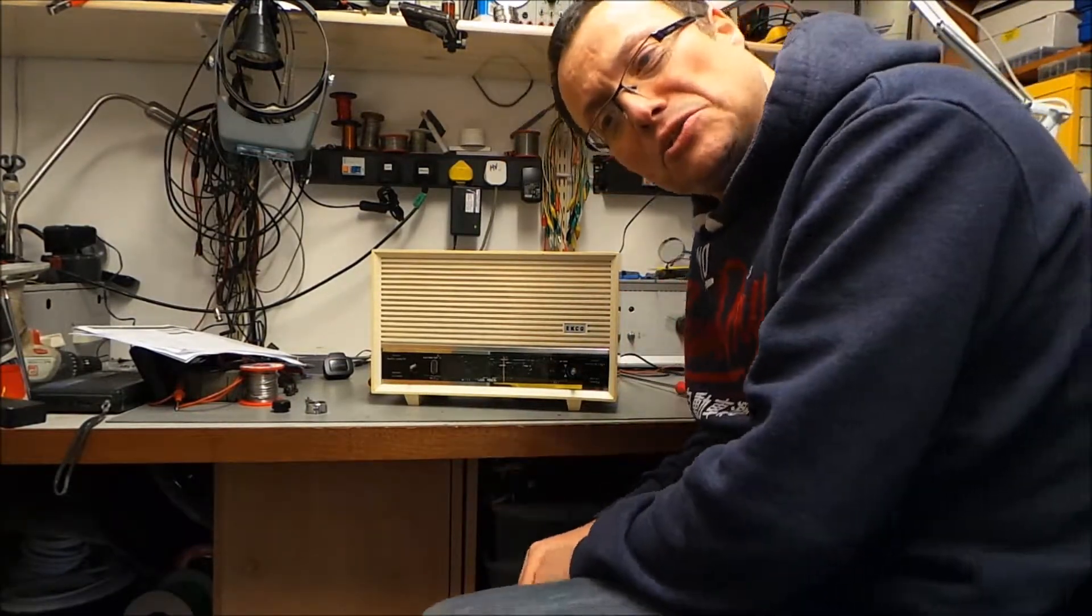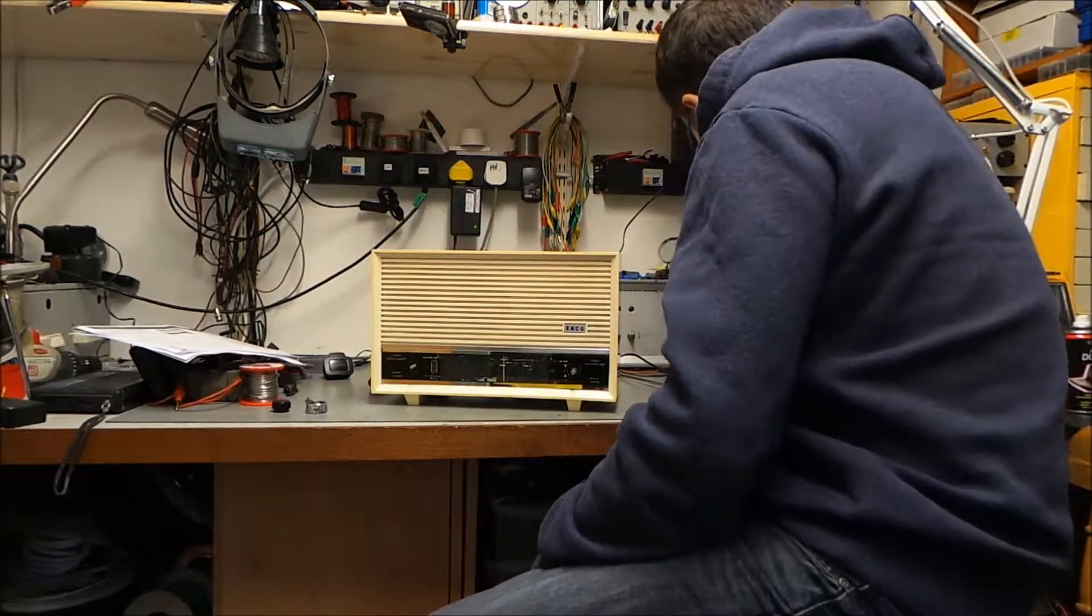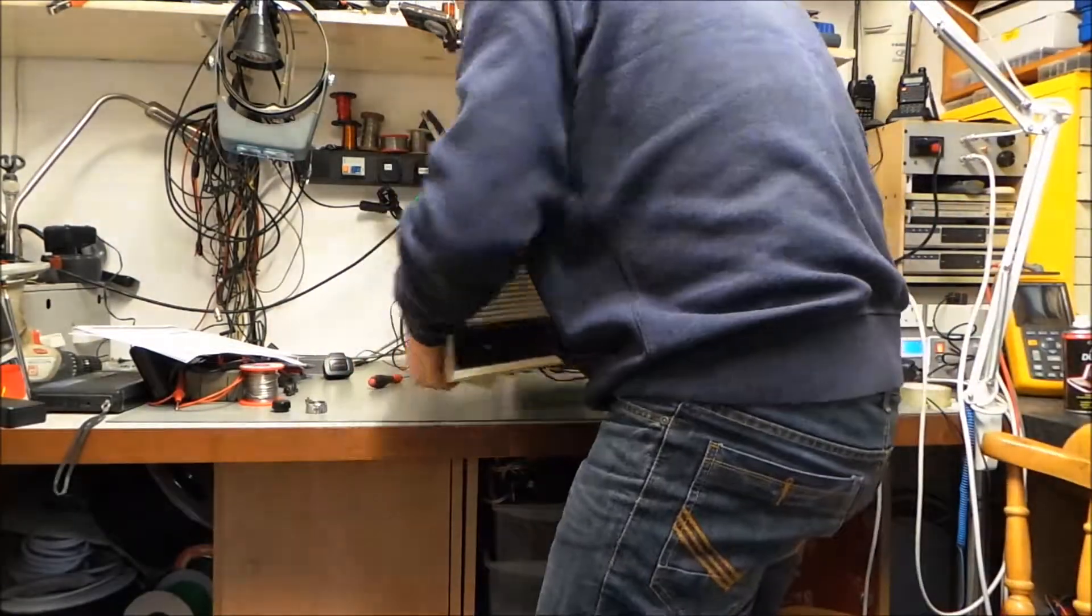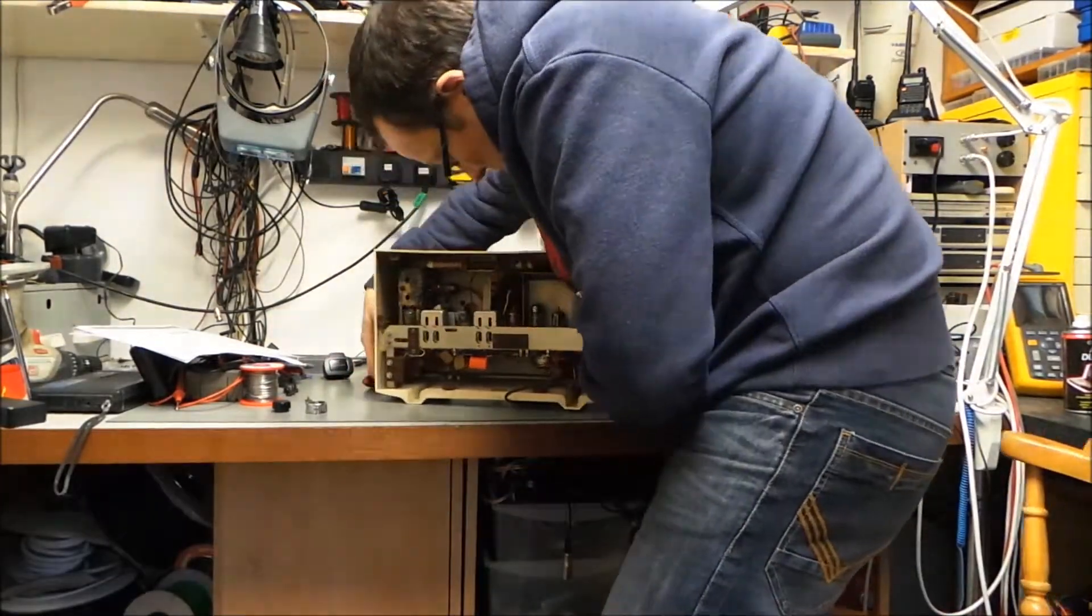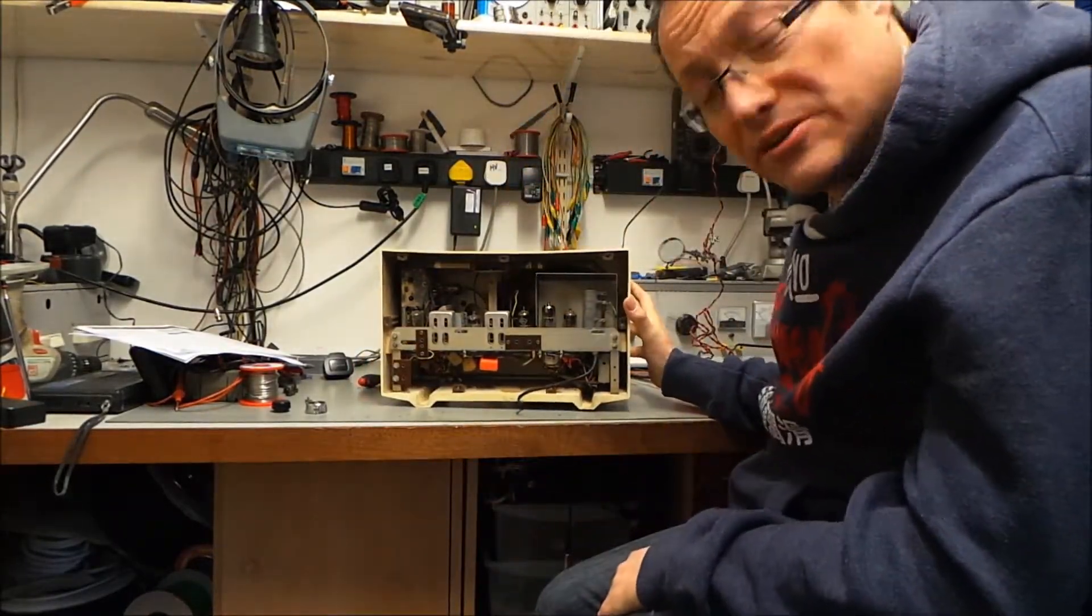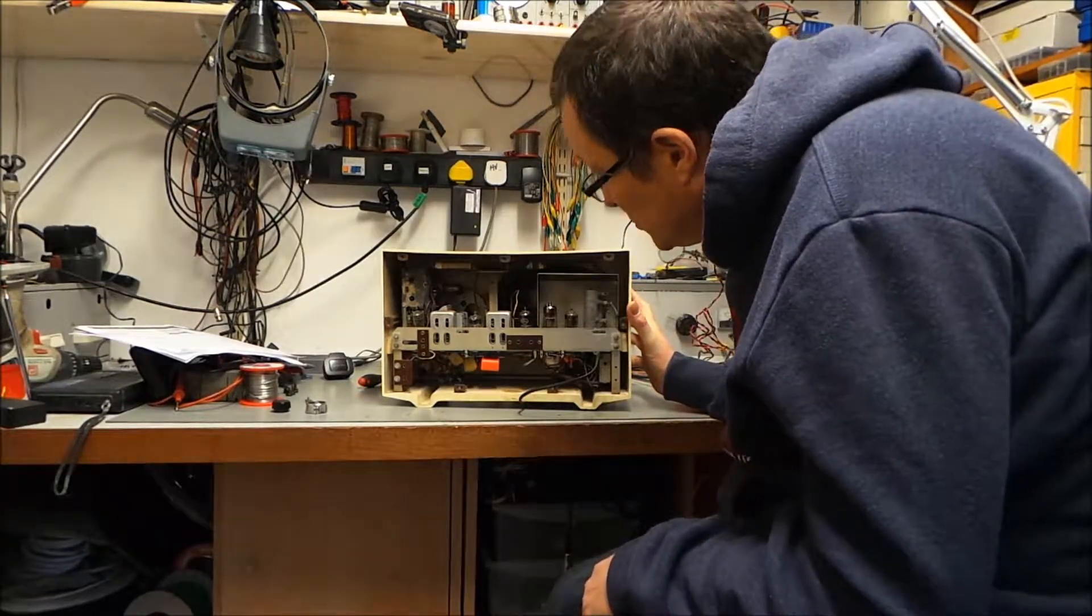So obviously if we want to switch it on now, I've got a mains isolation transformer so we're safely isolated from the mains. Let's put some voltage on there and wait a little while. We should see some heaters starting to glow. Yeah, there we go. You can see the UCC 85 come out on the camera, it's glowing nicely. Rectifier's glowing nicely, things should start to happen in a minute.